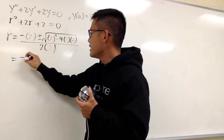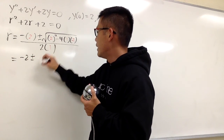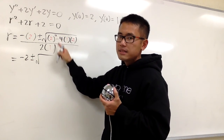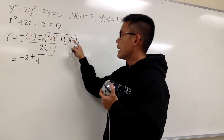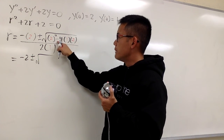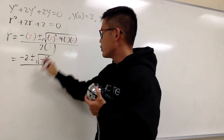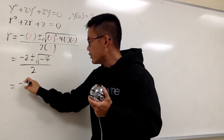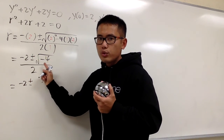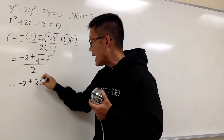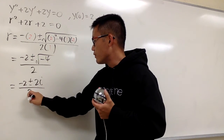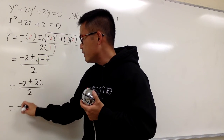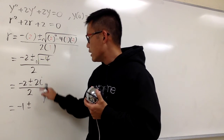Anyways, this is going to be negative 2 plus or minus the square root. This is 2 squared, which is 4, and then minus 4 times 1 is 4, times 2 is 8. So 4 minus 8 is negative 4, and then this is over 2 times 1, which is 2. Now we can reduce — we have negative 1 plus or minus...